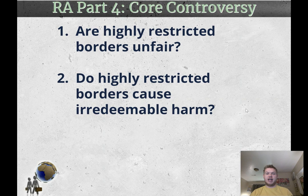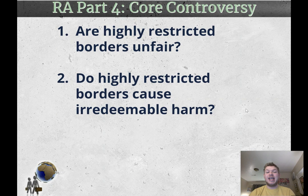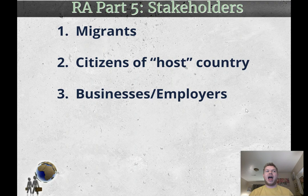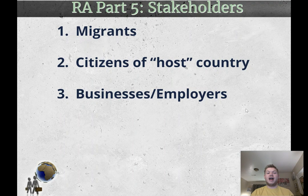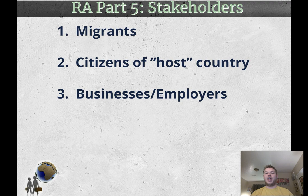The core issue being discussed here can be phrased simply as: are highly restricted borders unfair, or do they cause irredeemable harm? If the affirmative can prove the answer to either question is yes, they will probably win. If the negative can prove the answer is no, they will probably win. As for stakeholders, migrants are the number one group because the decision would affect their ability and freedom the most. Citizens of the host country, businesses and employers, the environment, and governments are also stakeholders, but migrants are the most directly impacted.